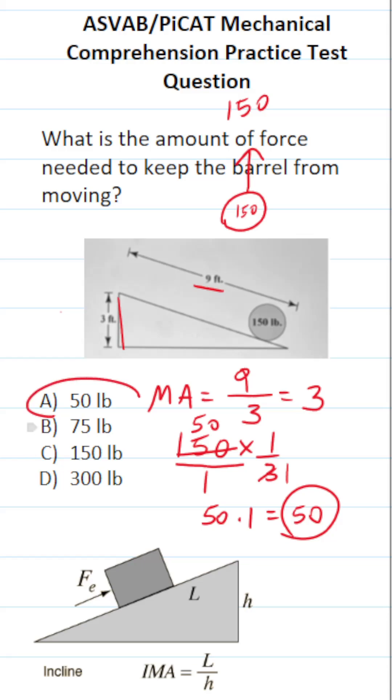In other words, it only takes 50 pounds of force to keep this barrel from moving. That's because this inclined plane, which is a simple machine, gives us a mechanical advantage of 3.